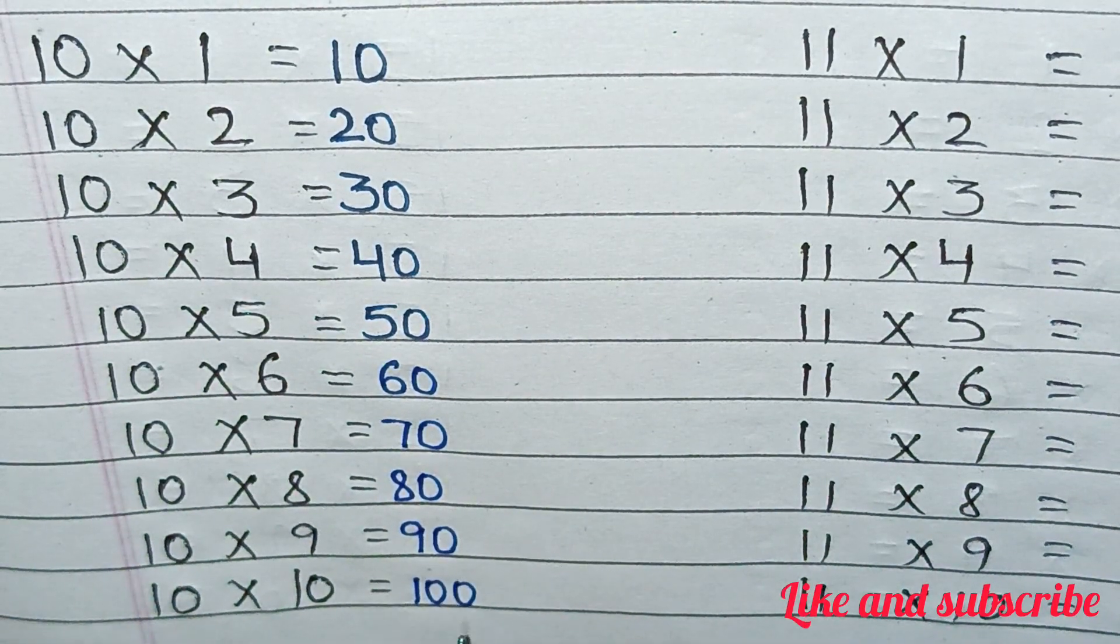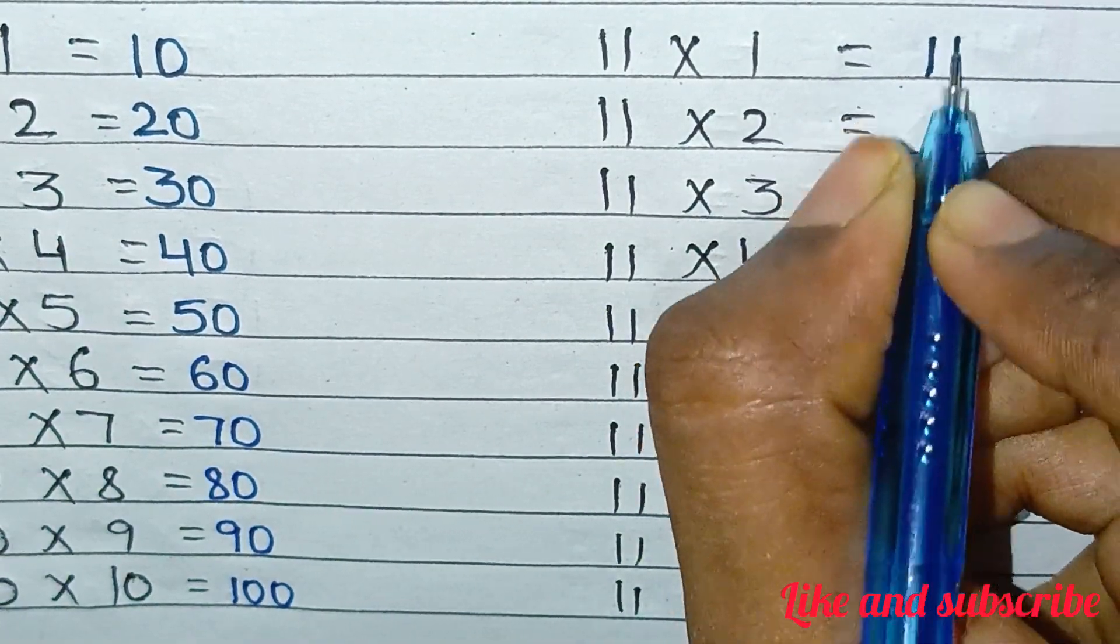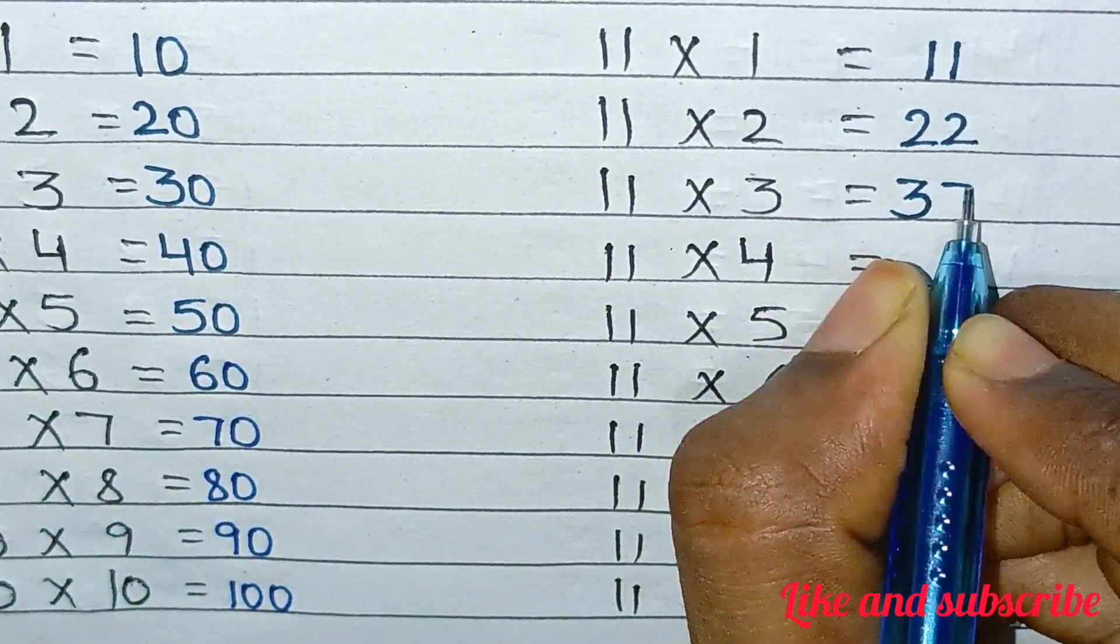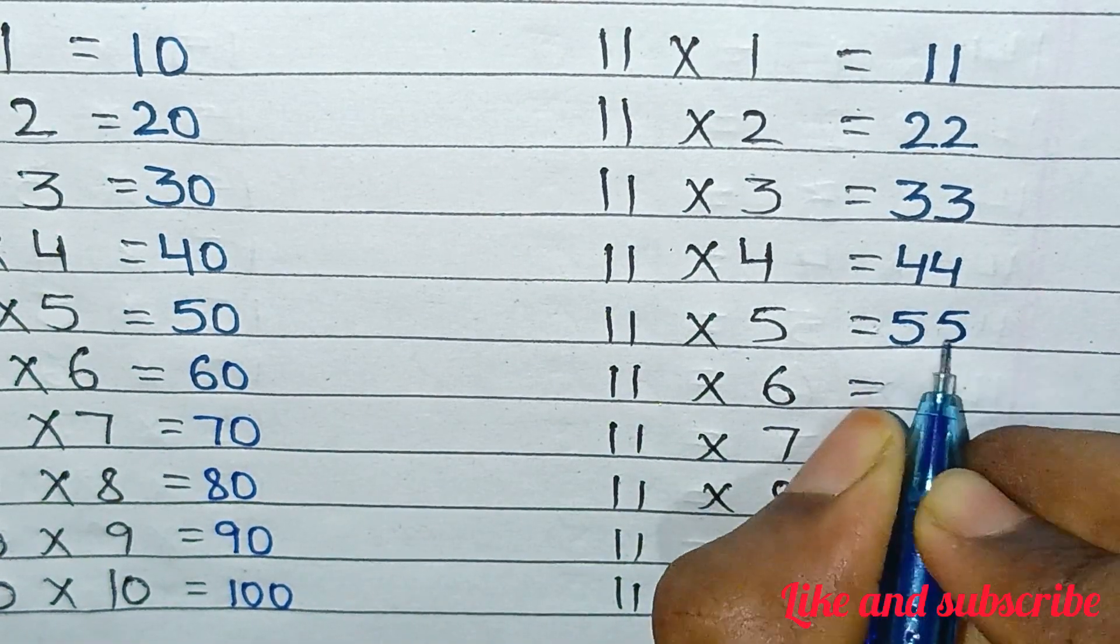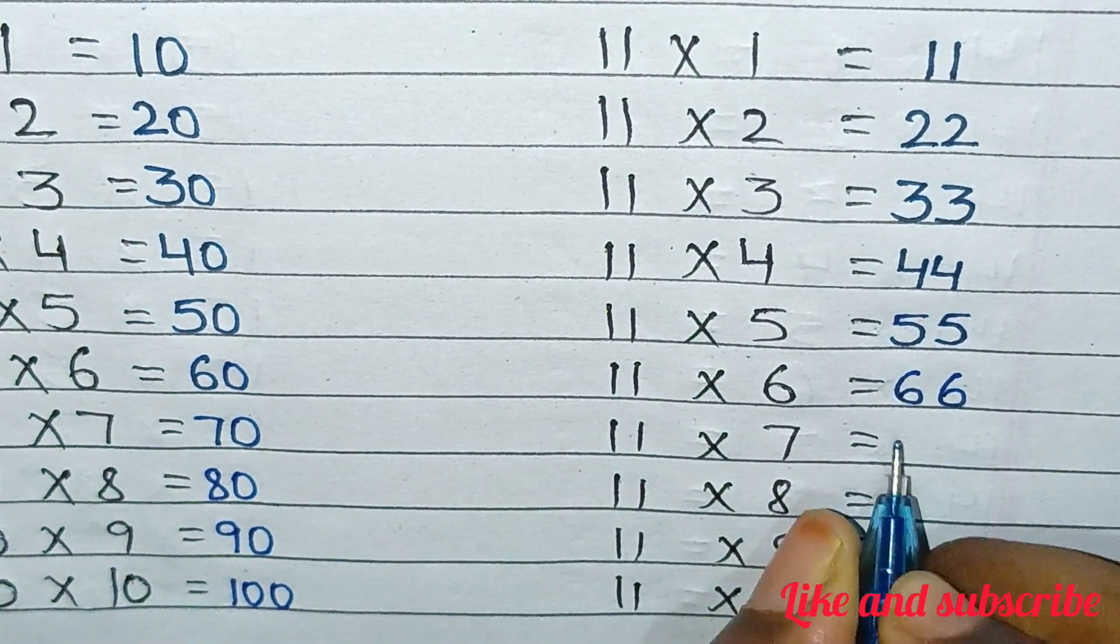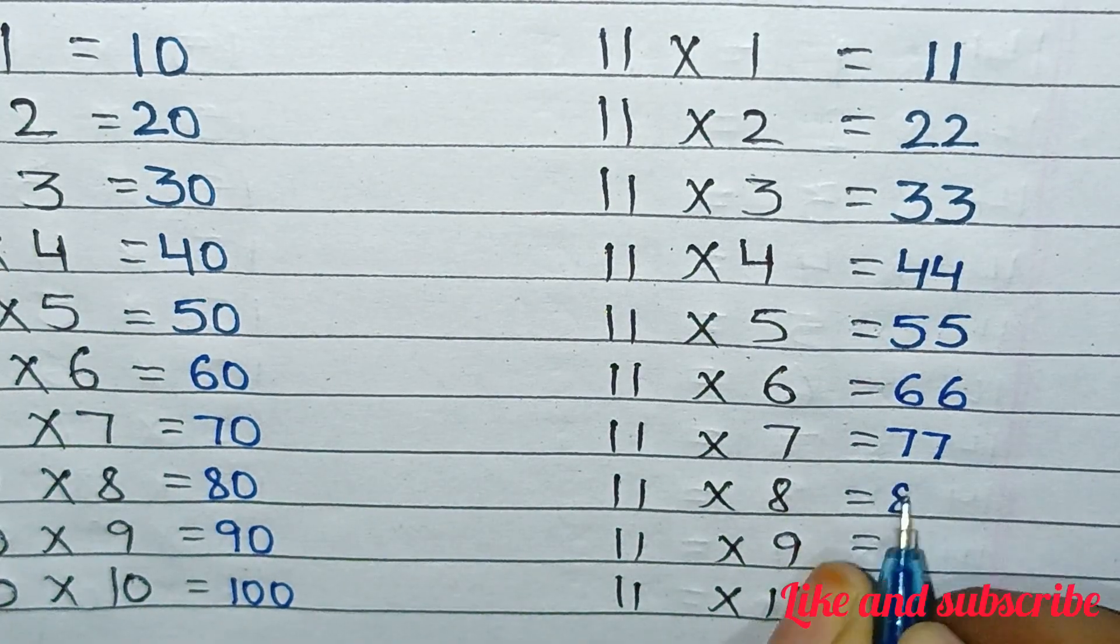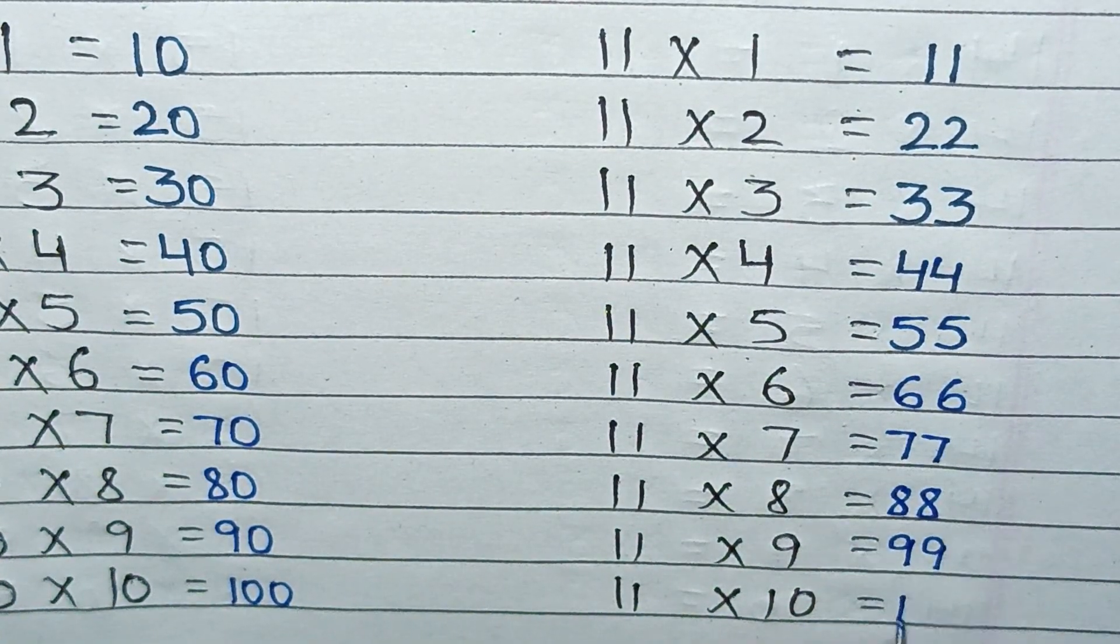10×10=100. 11×1=11, 11×2=22, 11×3=33, 11×4=44, 11×5=55, 11×6=66, 11×7=77, 11×8=88, 11×9=99, 11×10=110.